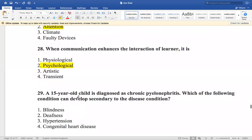Now the next is: a 15-year-old child is diagnosed as chronic pyelonephritis. Which of the following condition can develop secondary to the disease condition? Blindness, deafness, hypertension, and congenital heart disease. So pyelonephritis is related to kidney. So it will lead to hypertension.